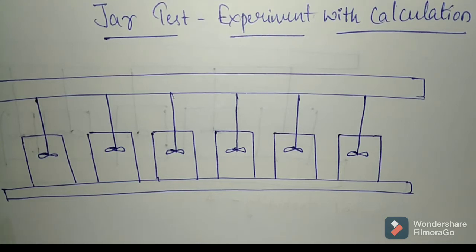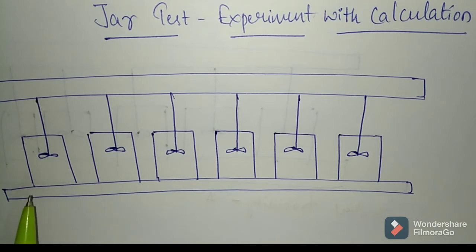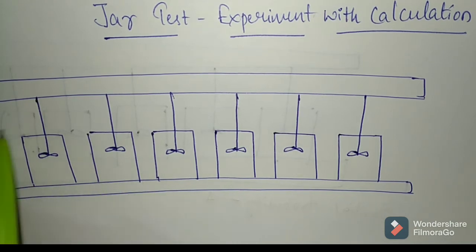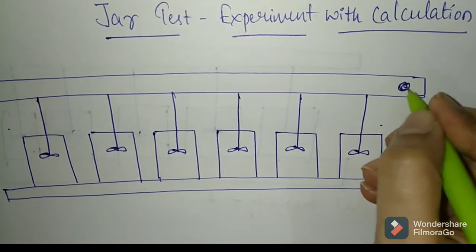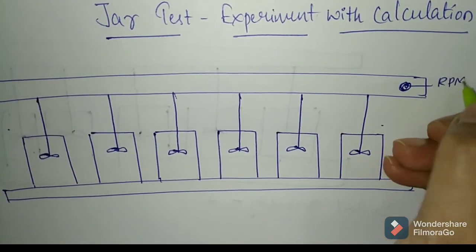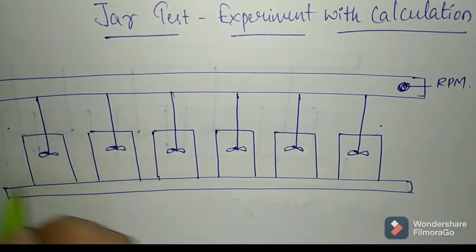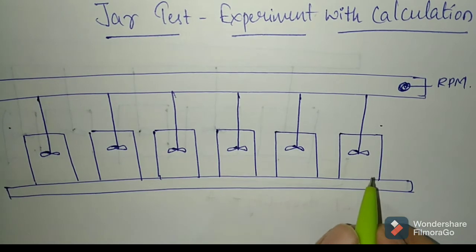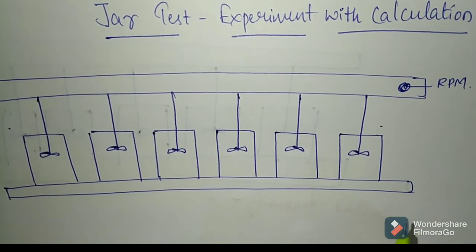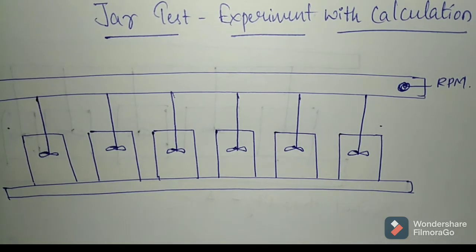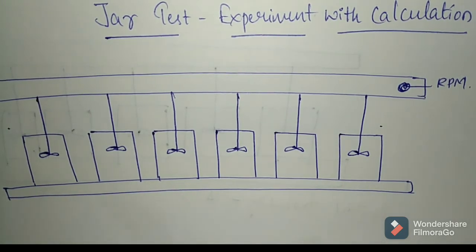The jar test experiment involves the jar test apparatus as shown in the diagrammatic form here. It involves the apparatus with six rotating paddles and a setup to control the rotation in terms of RPM. There is also an arrangement for keeping six jars. Some other setups come with fewer jars, but six jars is a better option for finding out the optimum dosage.